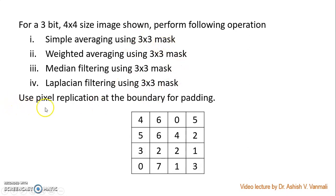They have clearly specified that we should use pixel replication at the boundary. Whenever we perform any spatial linear filtering operation, it is a 3-step process. In step 1, we need to extend the image at the boundary based on the mask. In the second step, we extract the sub-images. And then in the next step, we perform the operation of spatial linear filtering. So let's perform these steps one by one.